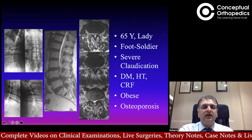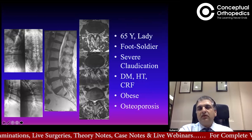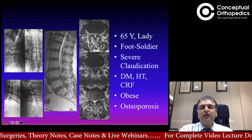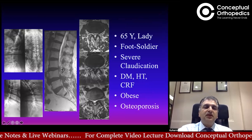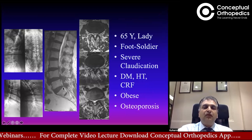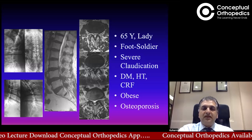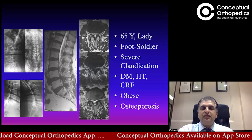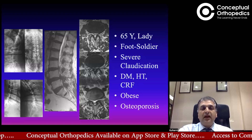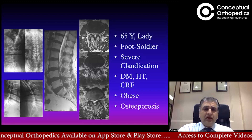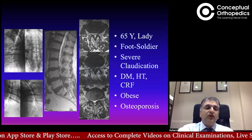Let me start with this particular example. This is an obese lady — her BMI is about 45. She's a foot soldier, she walks barefoot, she's a sanyasi. She has severe claudication pain. As you can see, she has stenosis at three levels: L3-4, L4-5, and L5-S1. She has a bag full of comorbidities — diabetes on insulin, hypertension, chronic renal failure, extreme obesity, and osteoporosis. She is a candidate who can have either a medical or surgical complication if you do a big open surgery, as you are exposing her to a significant amount of trauma.